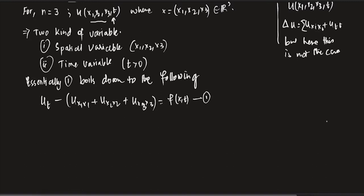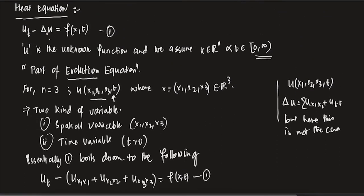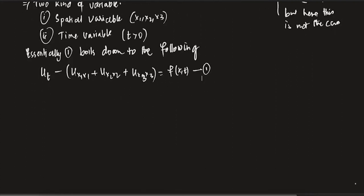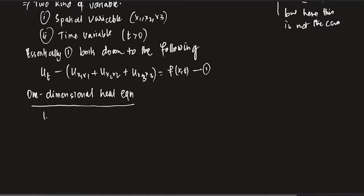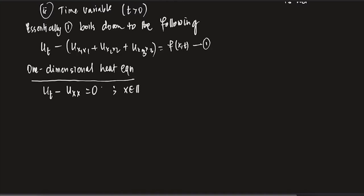There is a small notation: one-dimensional heat equation means the spatial dimension x varies in R. So basically, x is one-dimensional. That will look like u_t minus u_{xx} equals 0. That's your one-dimensional heat equation, with x in R and t greater than or equal to 0.